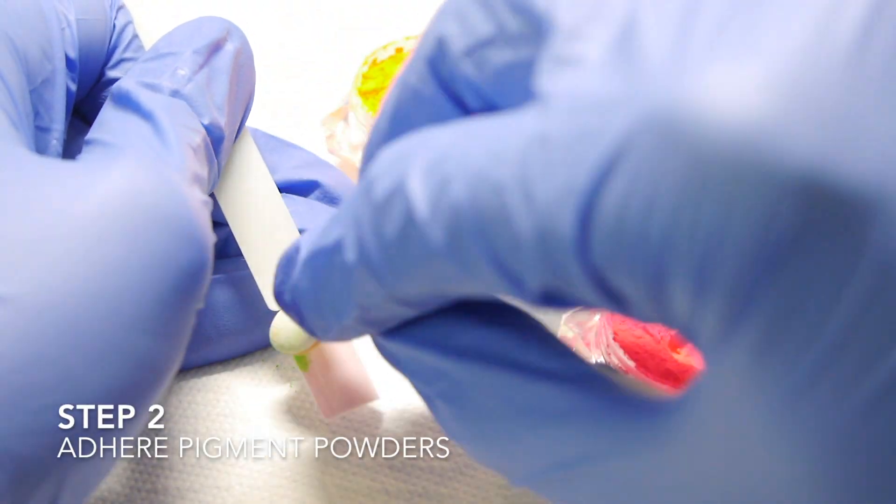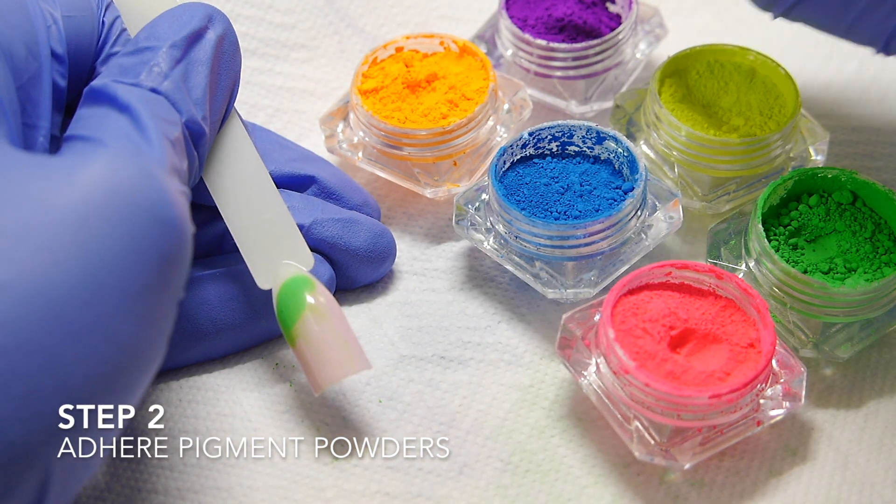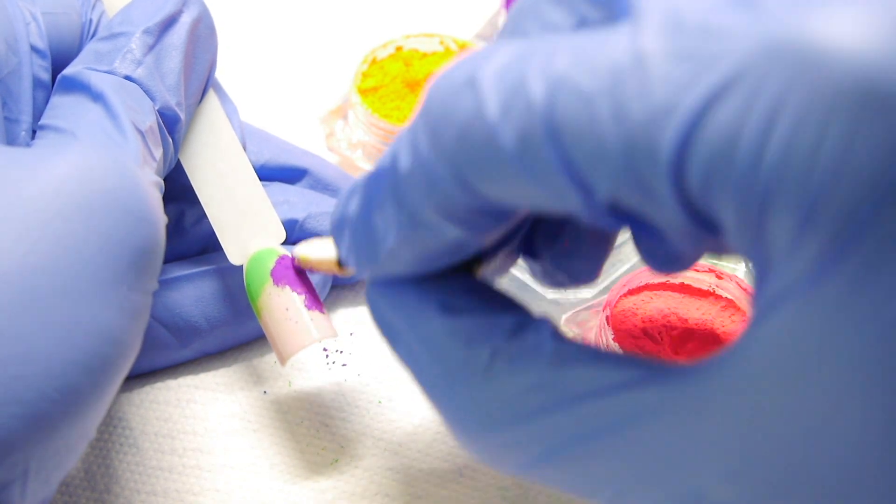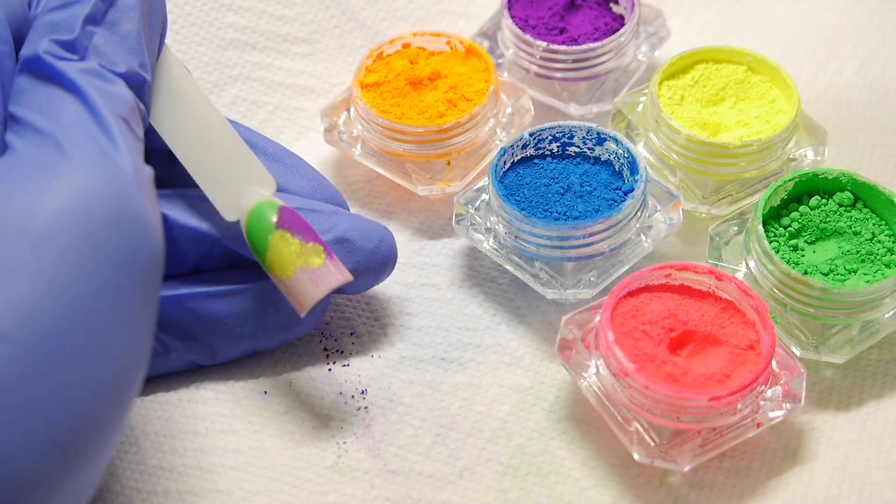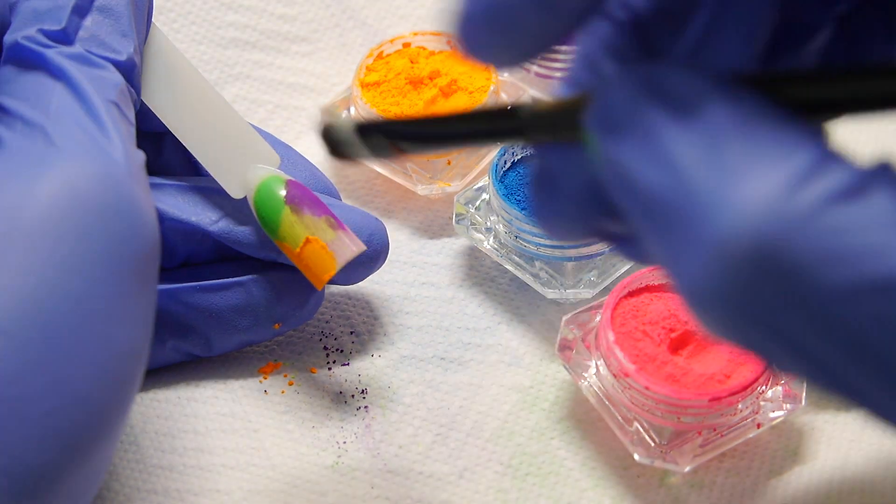To the inhibition layer of the second coat I'm pressing the pigment powders into the nail and using a fluffy brush to remove the excess powder in between each colour, dry brushing this on a paper towel before using it on the next.